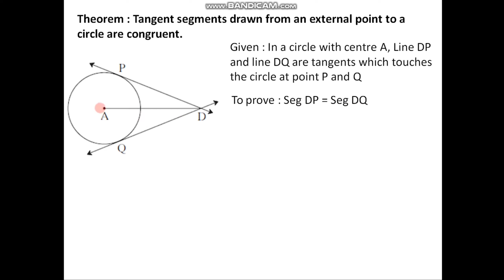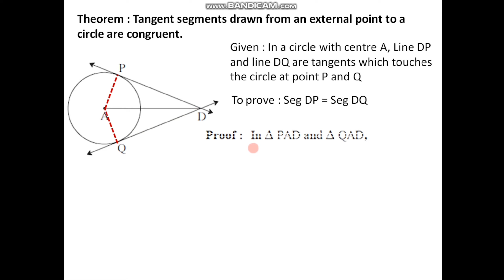To prove this we need one construction. We have to draw segment PA and segment QA, which are the radii of the same circle. By doing this construction we get two triangles: triangle APD and triangle AQD, from which we start the proof — that is, we begin with triangle PAD and triangle QAD formed due to this construction.